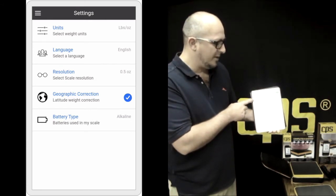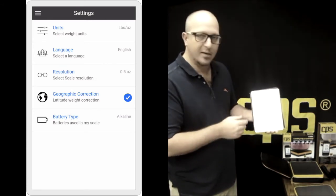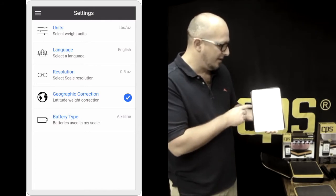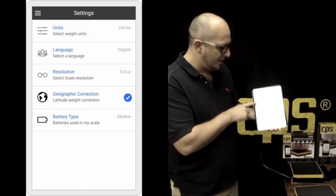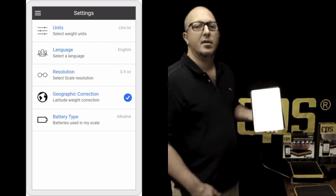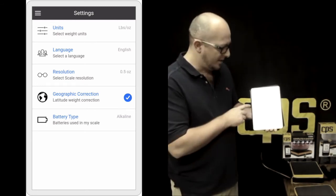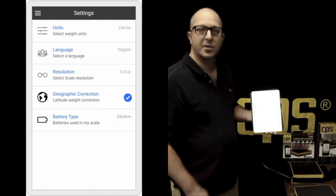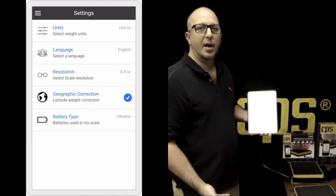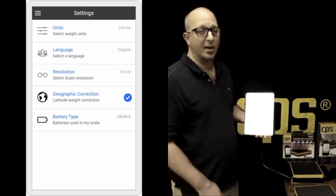You also have language. You can again select a different language or if someone else is speaking a different language and needs that, now you can change it. We have the resolution of the scale. We also have geographic corrections for different latitudes based on your location finder. And we also have a convenient tab here that tells you which different type of battery you have so it better tracks your battery life on the home page.